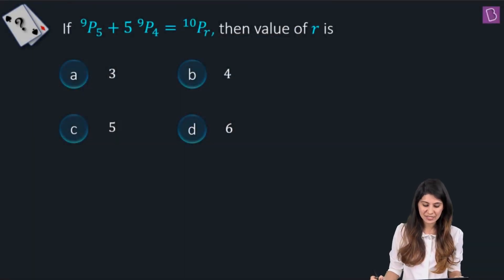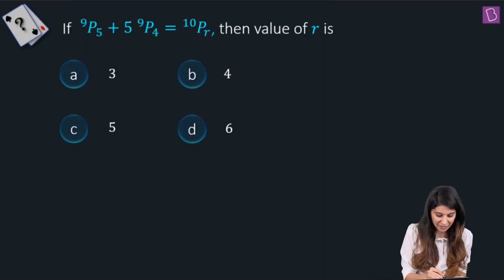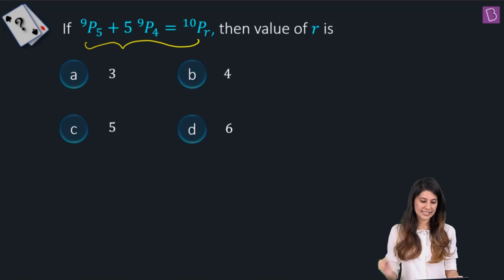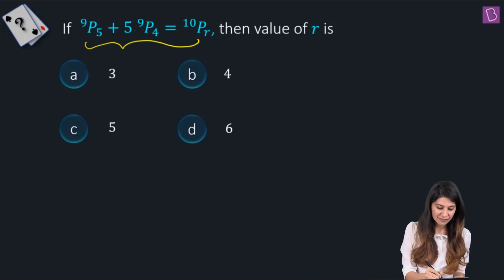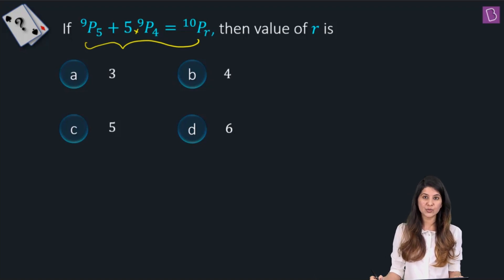In this question, we need to figure out the value of R if this equation is true. This equation is 9P5 plus 5 times 9P4, which equals 10PR.